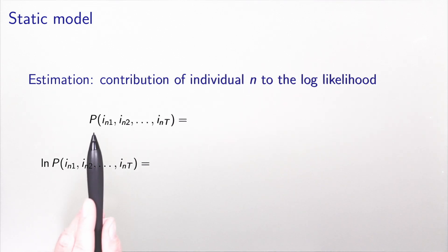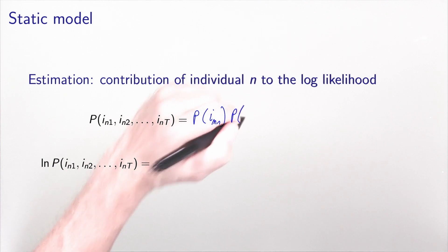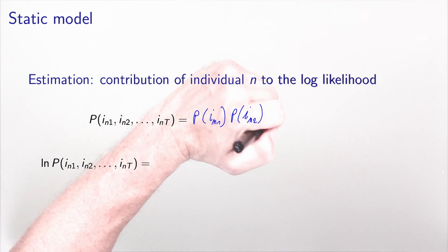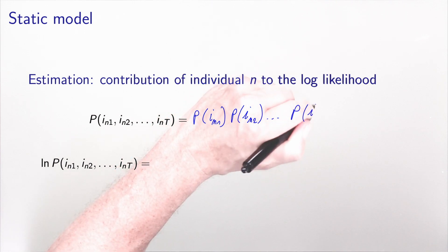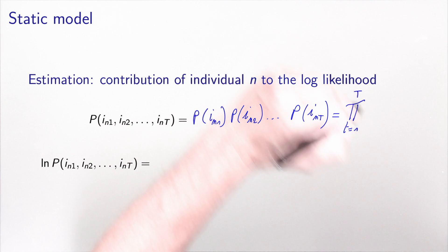As I discussed before, when we want to estimate these models, we need to write the logit function, and it consists in calculating the probability that the trajectory of an individual, the observed trajectory, is predicted by our model. The probability of the trajectory, i_n,1 until i_n,T, the sequence of all the choices performed by individual n. Because of the independence assumption that we have done, this is simply the product of all individual probabilities: the probability that the person makes the first choice, the second choice, until the last choice, which is capital T. This is the product over T of the choice probability.